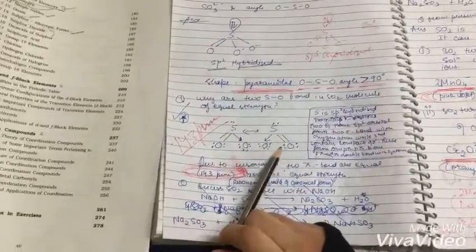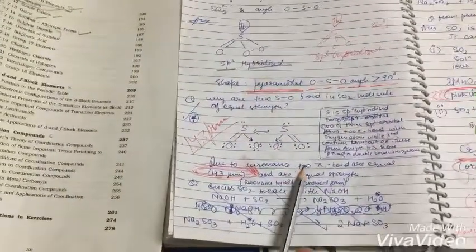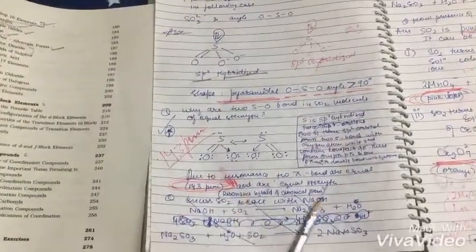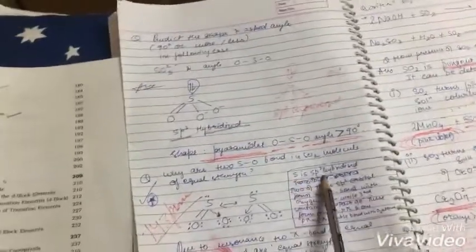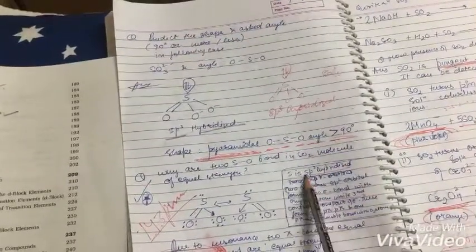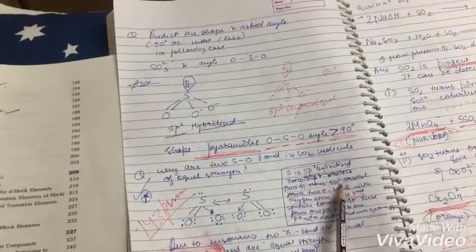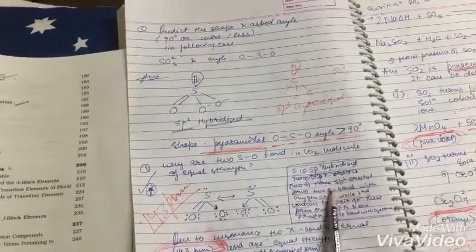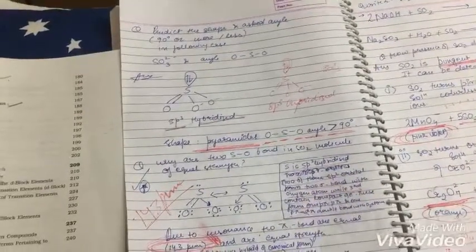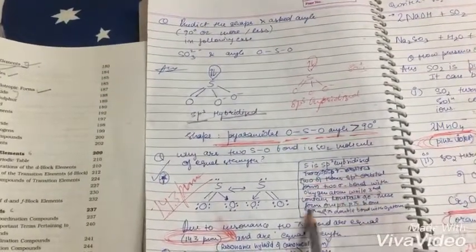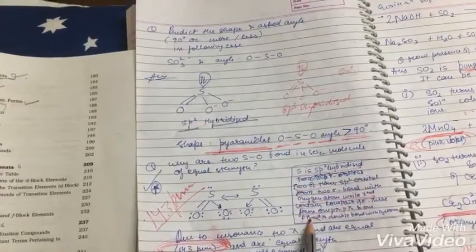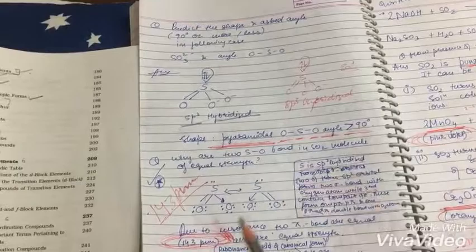Why are two SO bonds in SO2 molecule of equal strength? You need to make both resonating structures. Due to resonance, the pi bonds are equal at 143 pm and of equal strength - resonating hybrid. S is SP2 hybridized. Two of the three SP2 orbitals form two sigma bonds with oxygen atoms, while the third contains lone pair of electrons. These form P pi-P pi and one P pi-D pi double bond with oxygen atom.